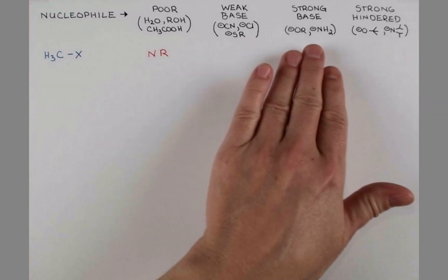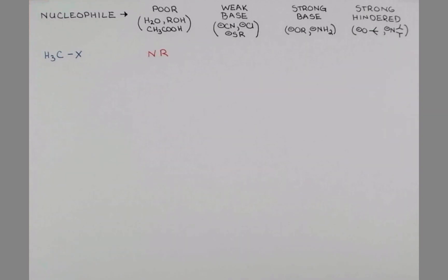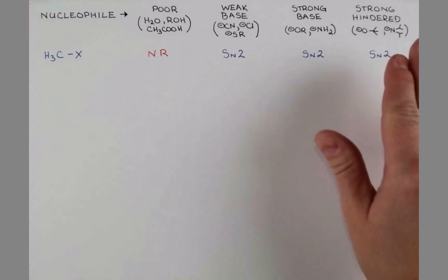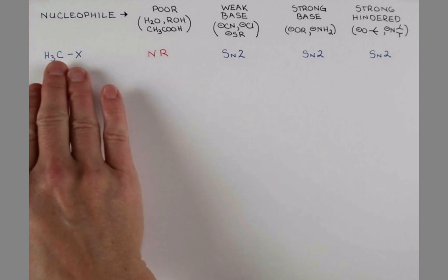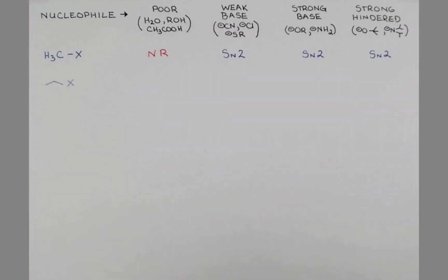With the rest of these nucleophiles, the methyl substrate will react. Since it can't form a carbocation, the only mechanism available is SN2. Even with these hindered nucleophiles, this is really very unhindered, so we're going to form a bond.